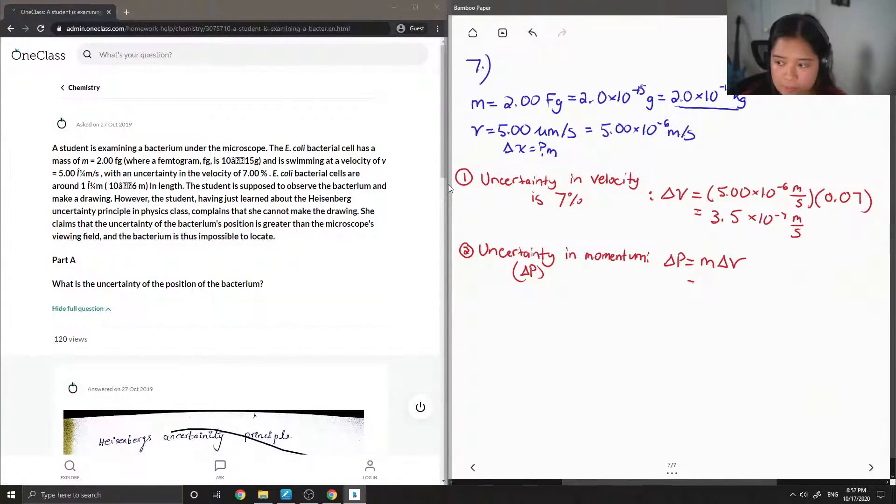So I'm just going to plug the values in. Then you get a final value of 7.0 times 10 to the negative 25. And the units are kilograms times meters over seconds.